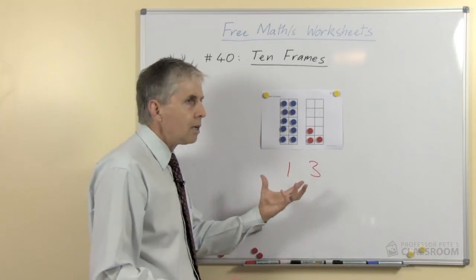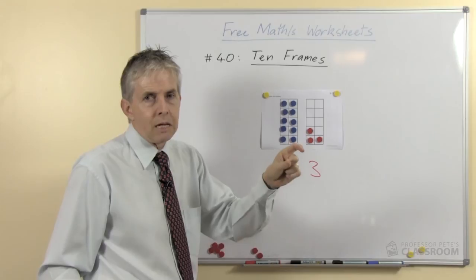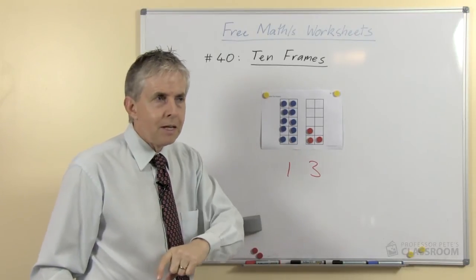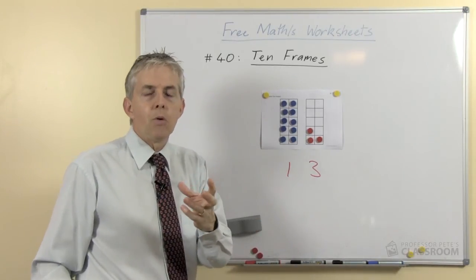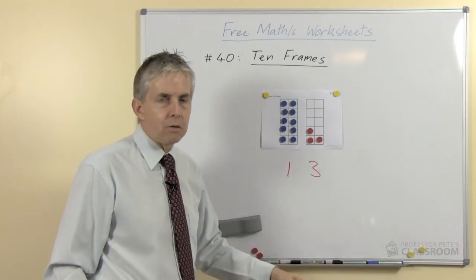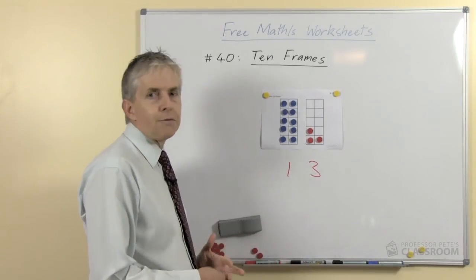So a child has to associate the thir part of the name with the number three. It's a bit like the number one third or the third in a sequence, so there's a bit of a link there.